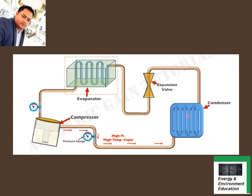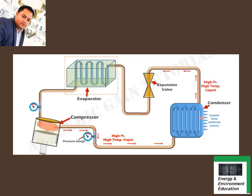When pressure increases, temperature also increases. So when the vapor refrigerant is compressed inside the compressor chamber, it heats up. This high-pressure, high-temperature vapor refrigerant then leaves the compressor and enters the condenser. The condenser absorbs the heat from the vapor refrigerant and completely converts it into liquid. The condenser can be water-cooled, air-cooled, or cooled by any other external substance, liberating the latent heat of the vapor.